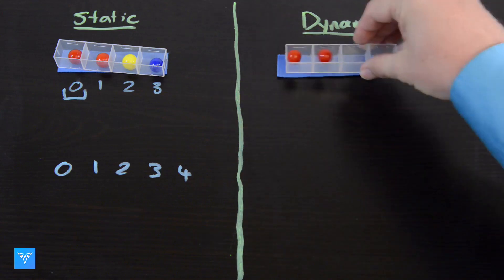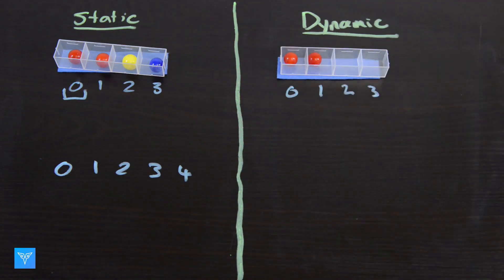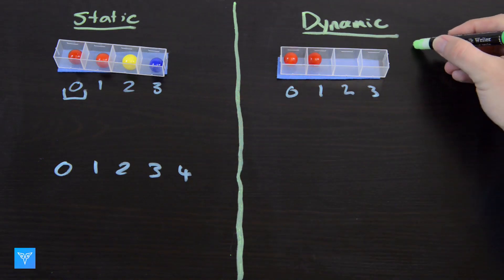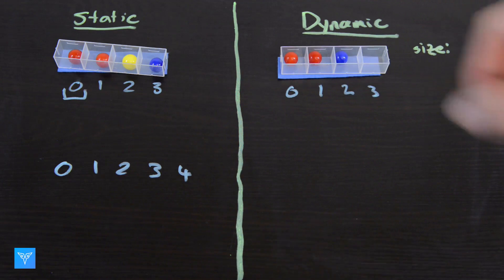A dynamic array reserves a larger amount of space than it needs, while also storing its size. When we want to add an element, if there's space, we can put the element in while increasing the size parameter.